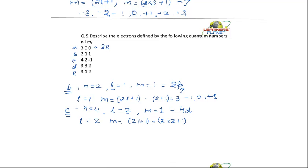Your M is equal to 2L plus 1. So, it will have 2 into 2 plus 1, and it will be having 5 values. So, it is minus 2, minus 1, 0, plus 1 and plus 2. So, it can be, we write it normally as DXY, DYZ, DXZ, DX²Y² and DZ².